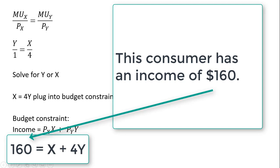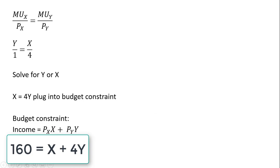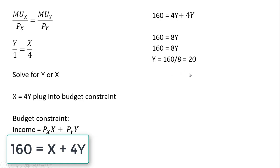We're going to plug this into the budget constraint. In general, income equals the price of good x times units of good x plus the price of good y times units of good y. The price of good x is 1, so we have x. The price of good y is 4, so we have 4y. Substituting x equals 4y into the budget constraint and solving, y equals 20. So this consumer should buy 20 units of good y, and plugging back in, x equals 80.